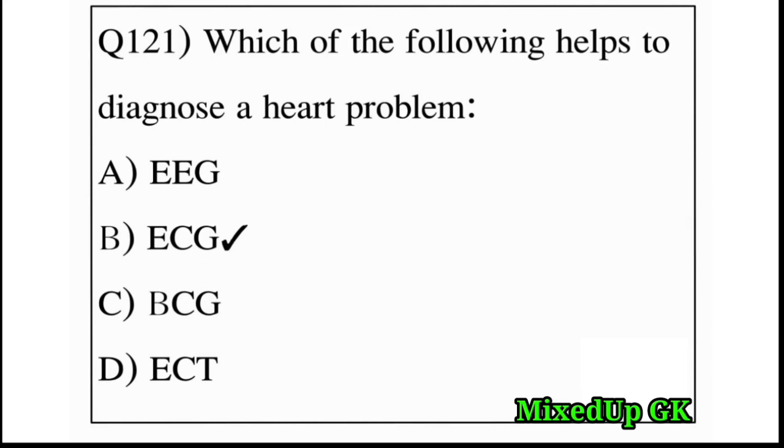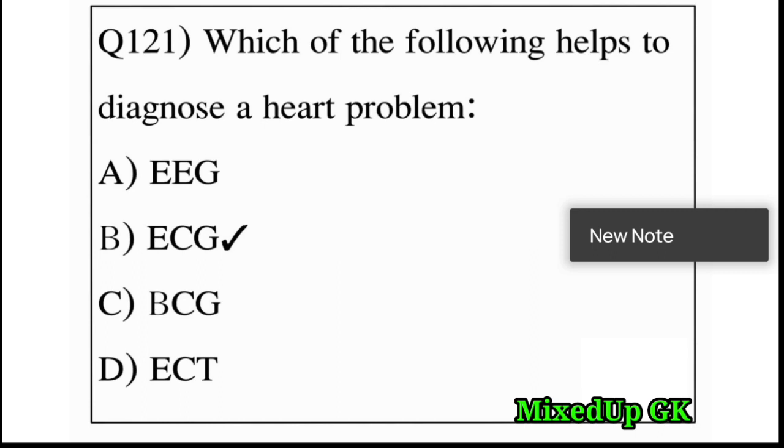First question: which of the following helps to diagnose a heart problem? Option A: EEG, Option B: ECG, Option C: BCG, Option D: ECT. The answer is Option B: ECG.